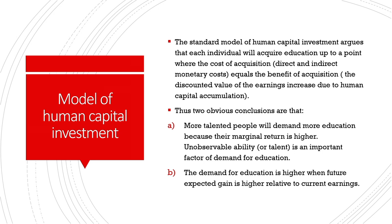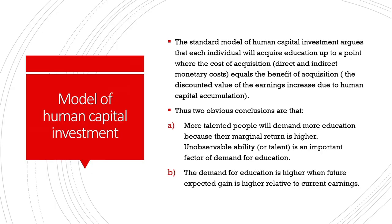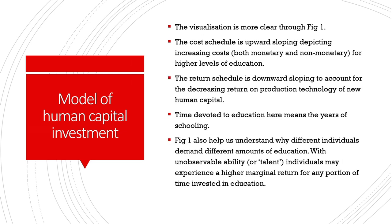We will devote a separate lesson to the human capital model as the course progresses. In this lesson, we are simply making a distinction between the concepts of human capital and physical capital, and then positing it against the conceptual framework of human rights. The standard model of human capital talks about costs and returns, with two basic implications: more talented people will always demand more education because they expect higher future returns, and the demand for education is higher when the future expected gain is higher relative to current earnings.